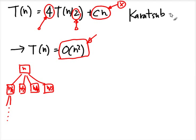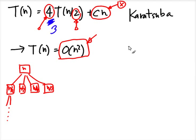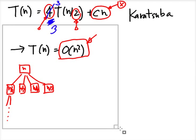So the goal is to do something with either the sub-problem count or the split factor. Karatsuba — this is not a Japanese name, it's Russian — instead of doing four multiplications, was able to get this done with only three multiplications. Let's see how changing from four to three affects the running time.